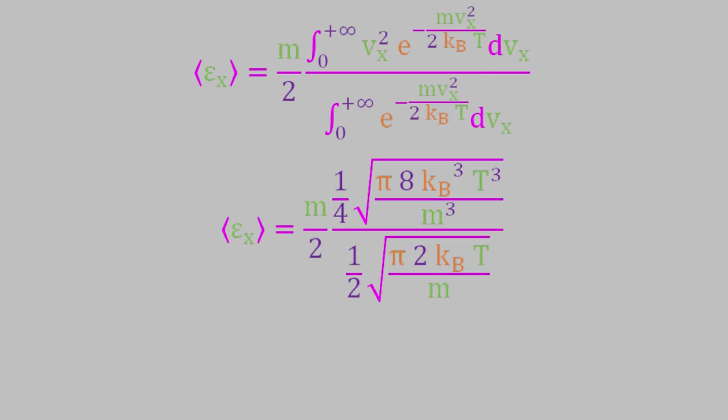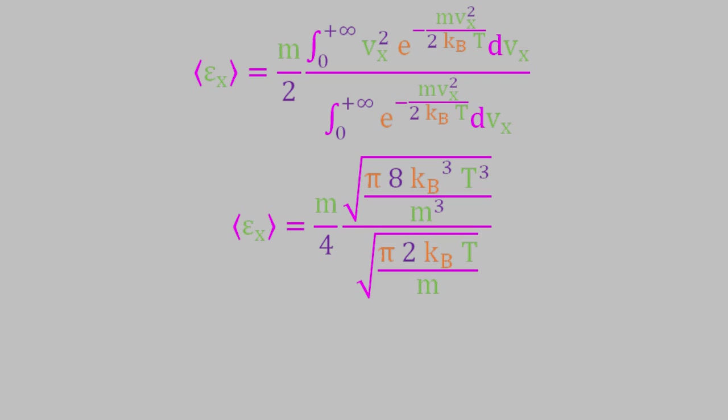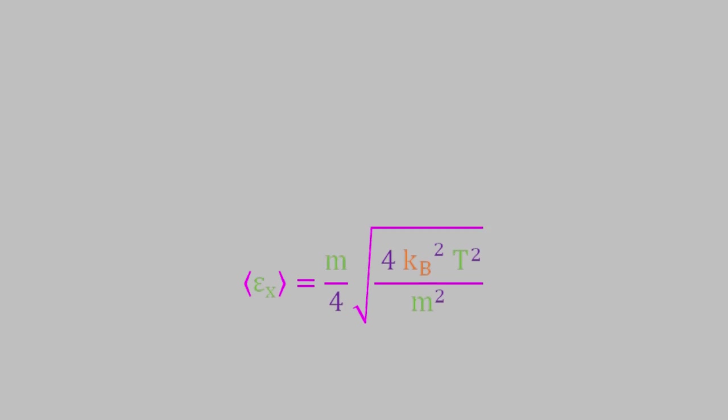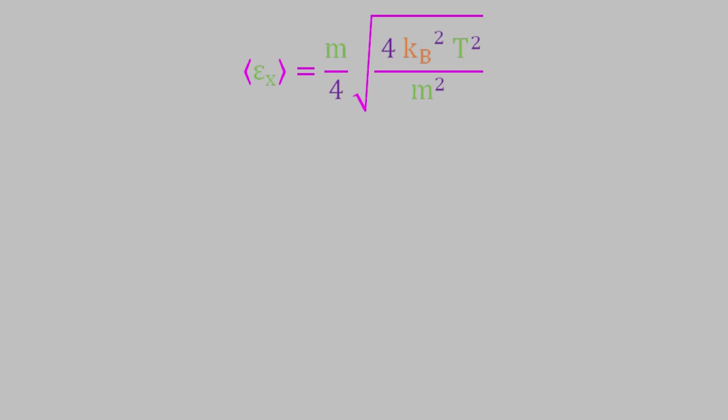Now let's simplify the overall equation. The terms outside the square roots can be simplified to m over 4. Inside the square roots, the pi's cancel out and some of the kb's, t's, and m's cancel out to give us the square root of 4 times kb squared t squared over m squared. We can take the square root of those terms, so we have m over 4 times 2 kb t over m.